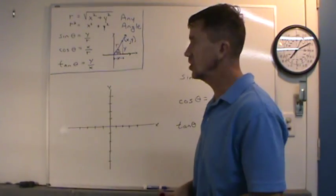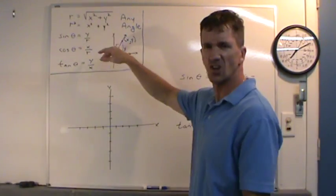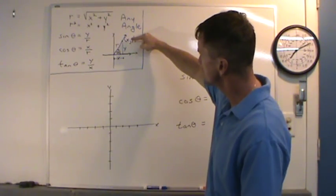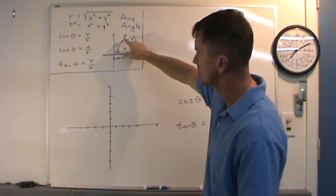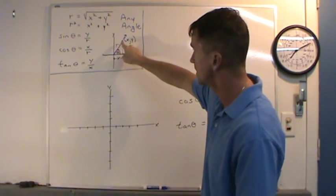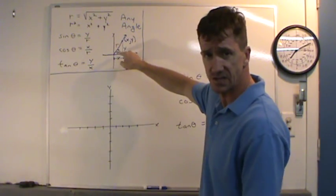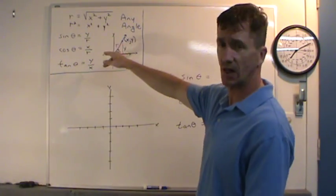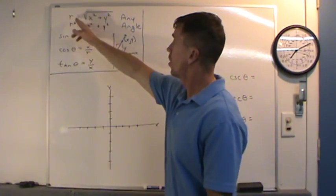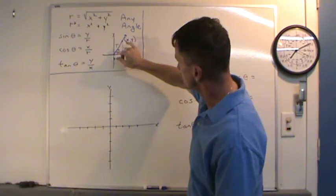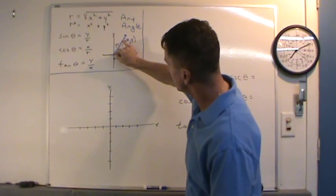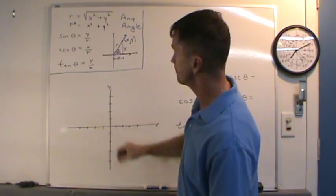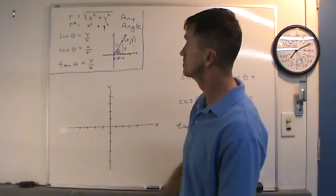Hi everyone. In this video we're going to talk about the trig functions of any angle. In this sketch right here, this point (x, y) lies on the terminal side of this angle rotating in standard position. The definitions are as follows. R will equal the square root of x squared plus y squared, because R equals that distance from the origin to the point. Notice that's coming from the Pythagorean Theorem.